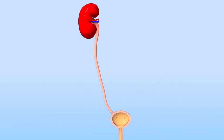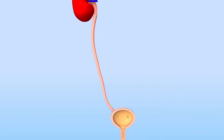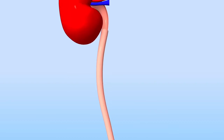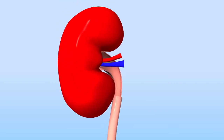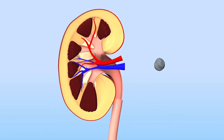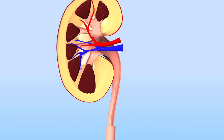A kidney stone forms within the kidney due to a range of conditions. A lack of fluid intake is the most common reason people form kidney stones. When a kidney stone falls down the ureter, it can get stuck within the ureter.